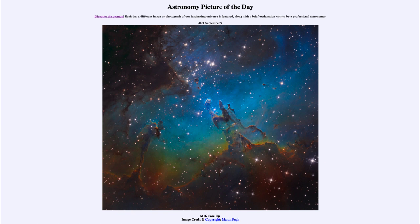Stars are still in the process of formation, but 7000 years in star formation is a very short period of time, and likely very little has changed. Although we will not know for sure for 7000 years, until the light that is leaving these stars today reaches us here on Earth.